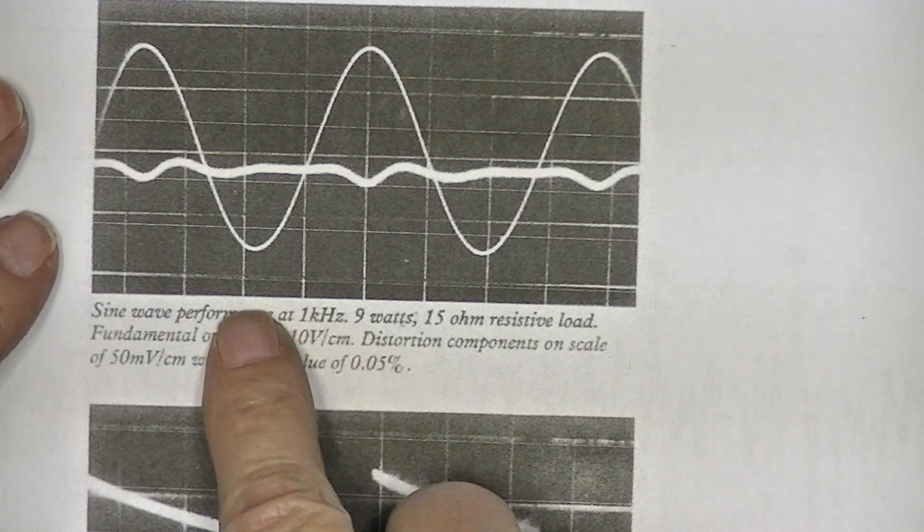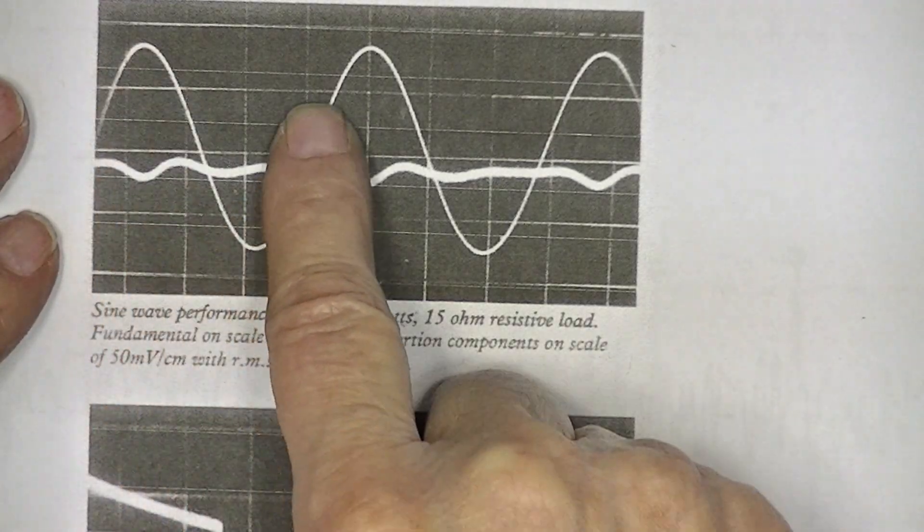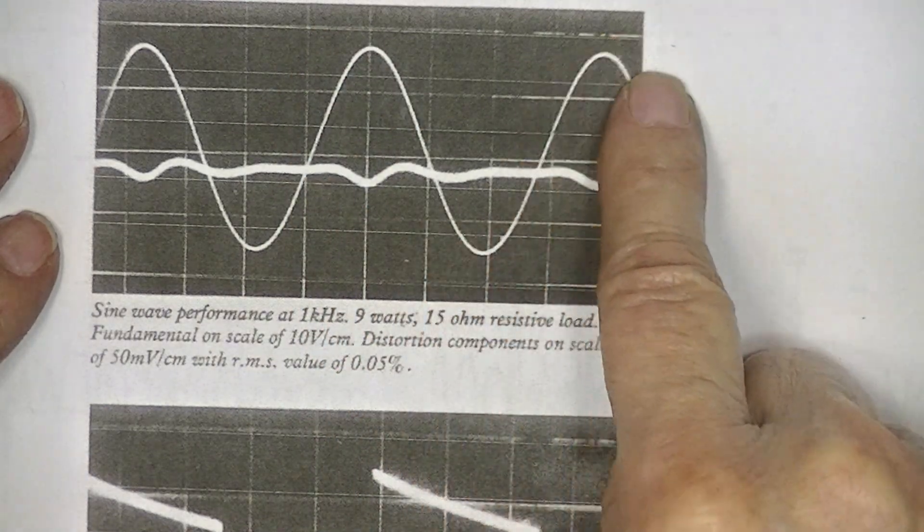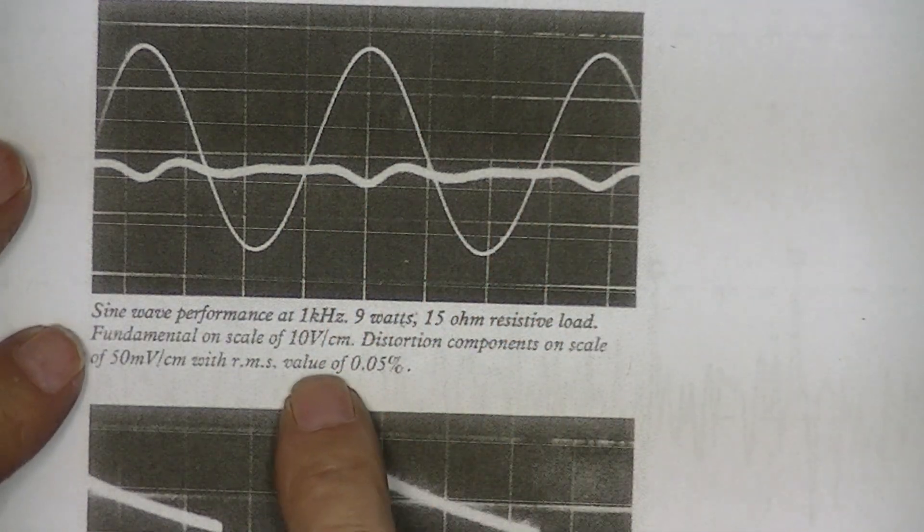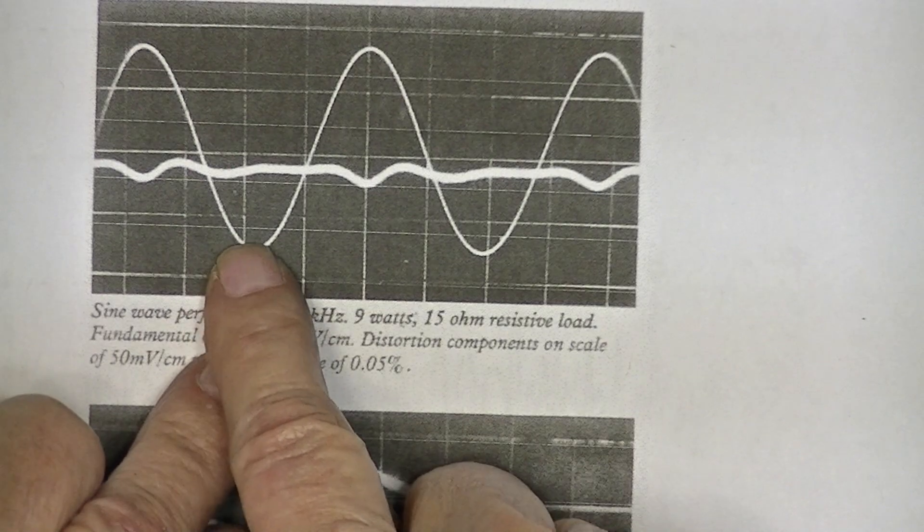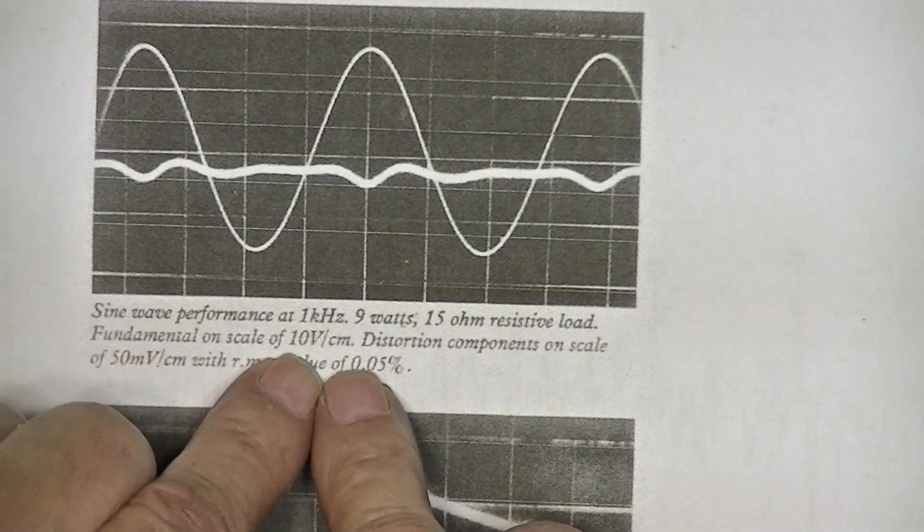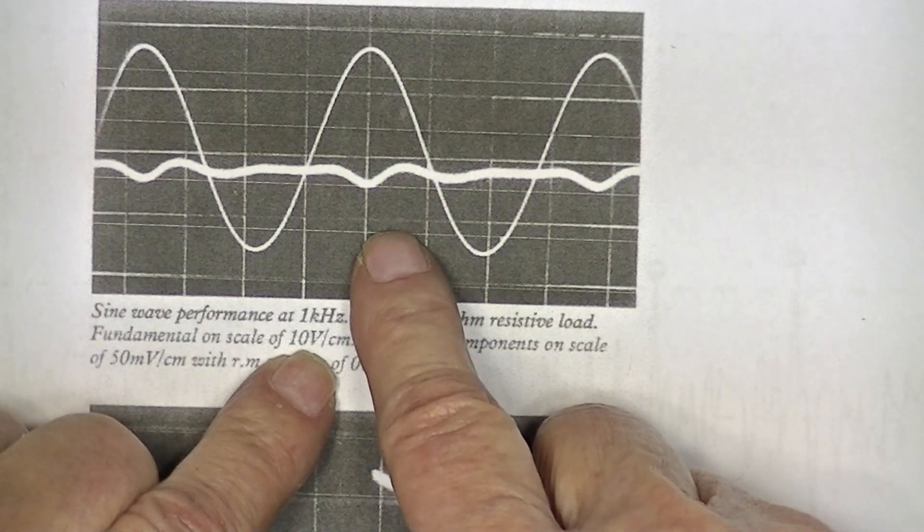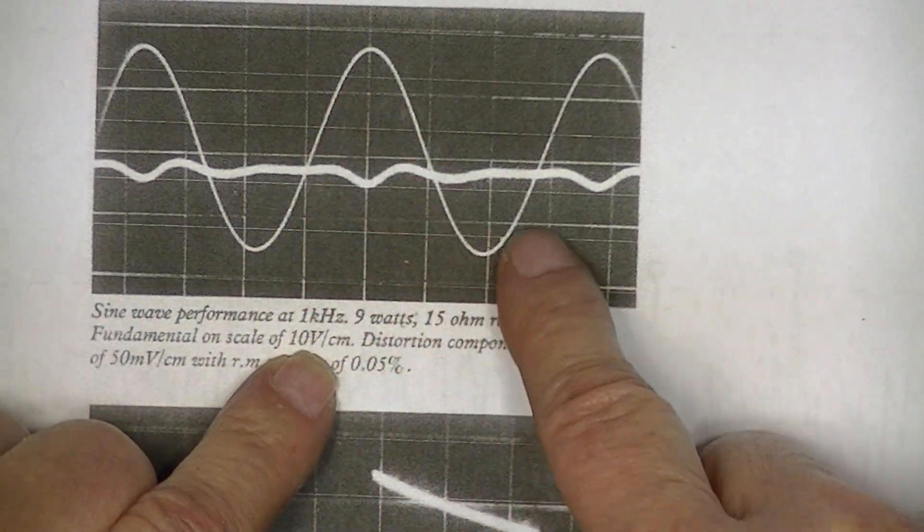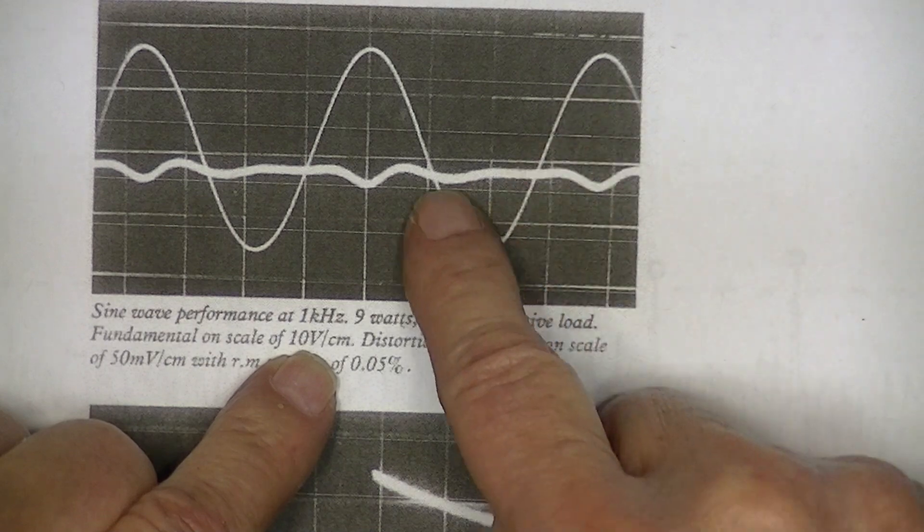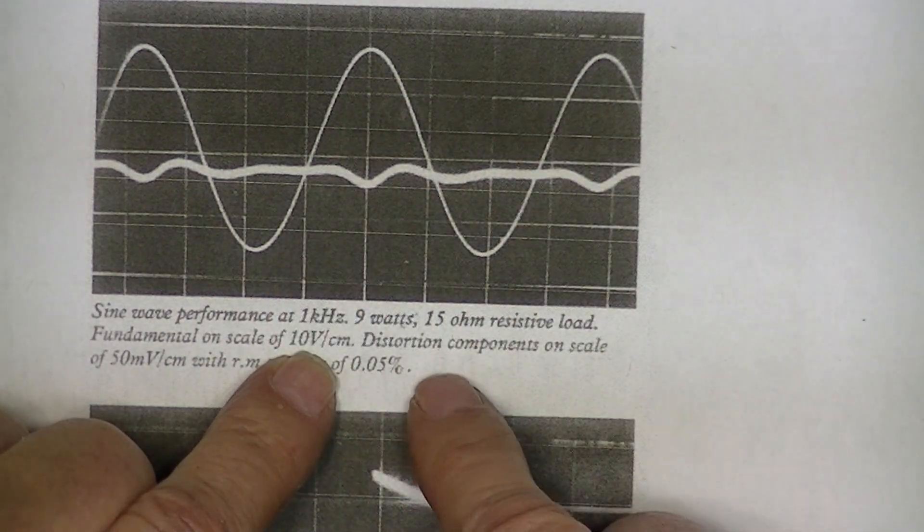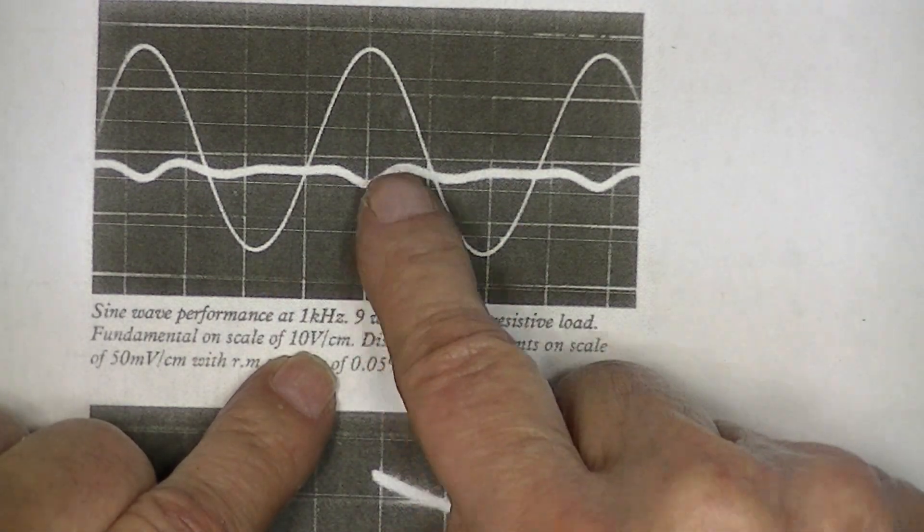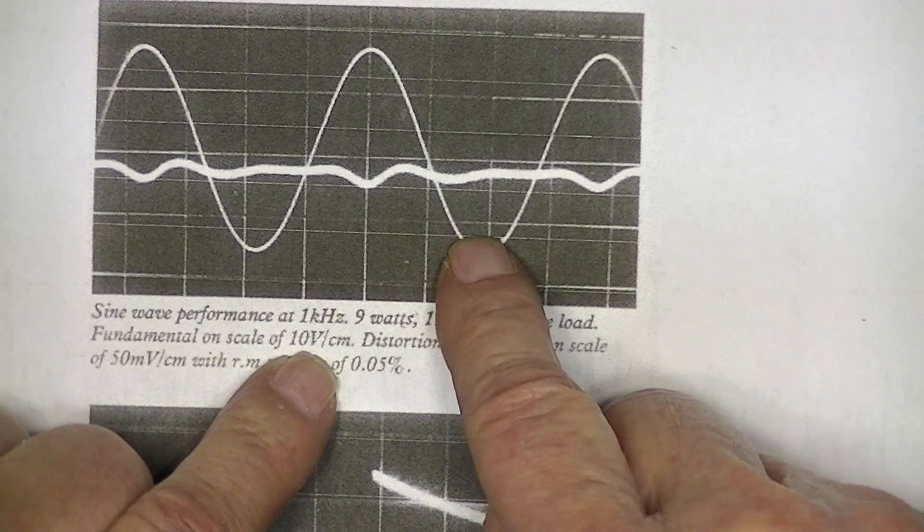This represents a one kilohertz sine wave at the output, and we'll call this the fundamental. That's 10 volts per graduation, so that's 30 volts, the fundamental voltage.